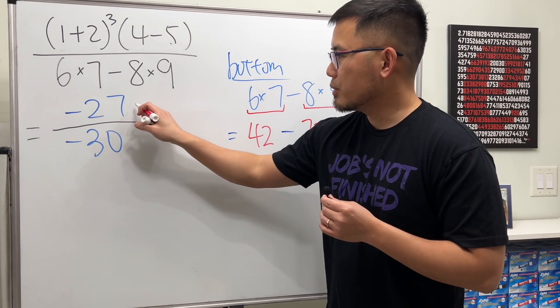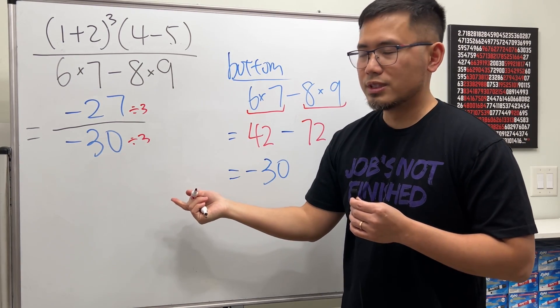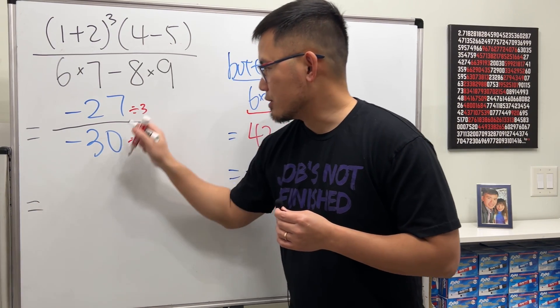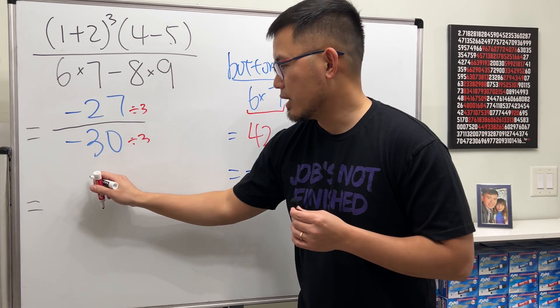3 works, so I'm going to divide this by 3, divide this by 3. Of course you can also do this mentally, but I just want to write it down. We are using 3 to reduce this. 27 divided by 3, we get 9, over 30 divided by 3, we get 10.